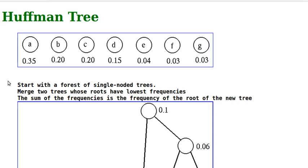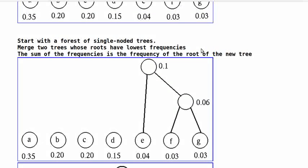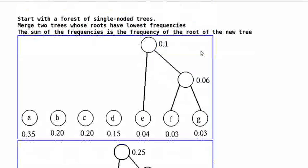A Huffman code can be obtained by traversing a Huffman tree, which can be constructed in the following way. Start with a forest of single-noted trees. Merge two trees whose roots have the lowest frequencies. The sum of the frequencies is the frequency of the root of the new tree. So in the above example, we first merge F and G as they have the lowest frequencies of 0.03. The merged tree root has a frequency of 0.03 plus 0.03 equal to 0.06.